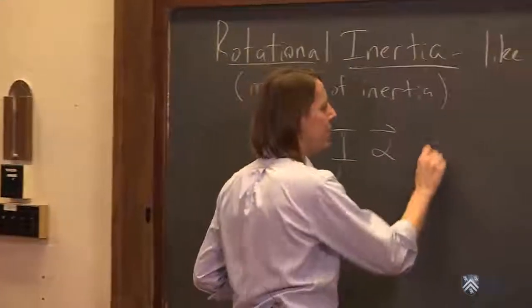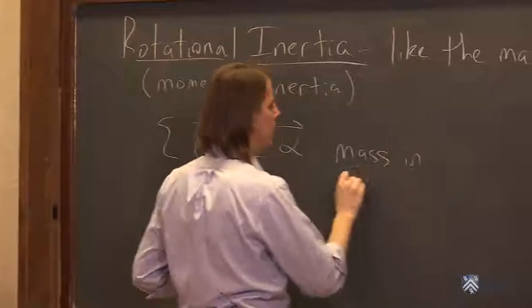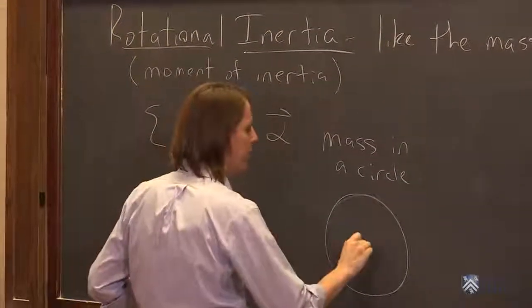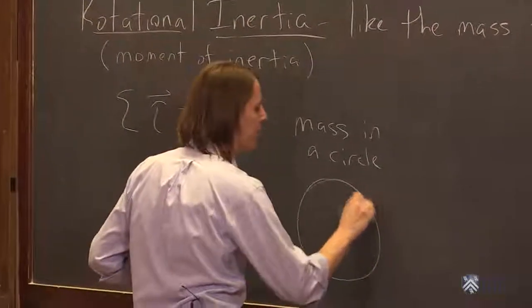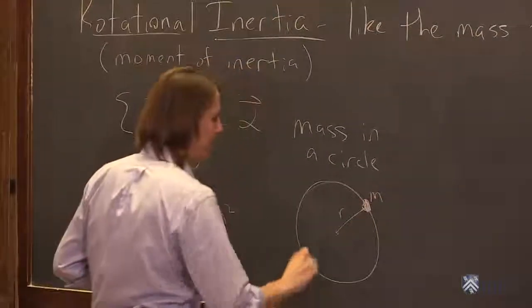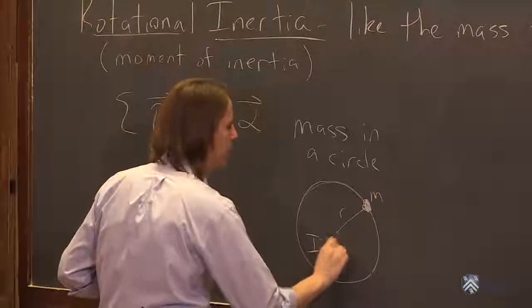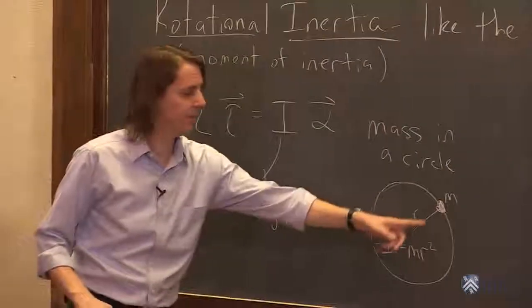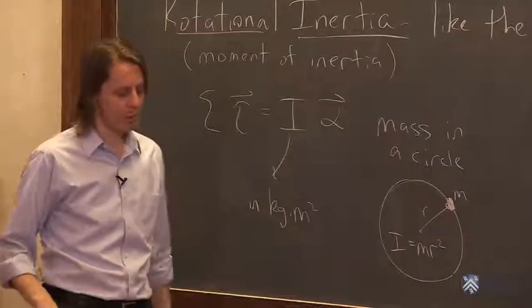So let's look at a mass in a circle. Basically, our uniform circular motion we dealt with before. If we're at some radius and we have some mass m, I equals mr². That's not for the disk. That's for the individual mass moving around a circle.